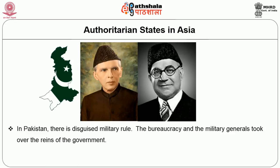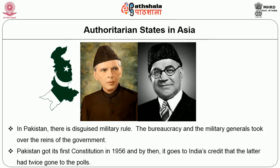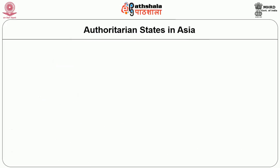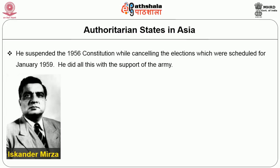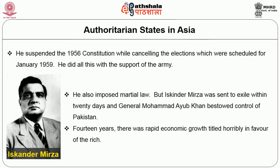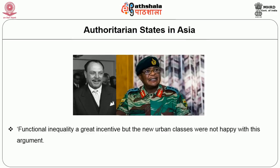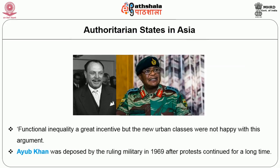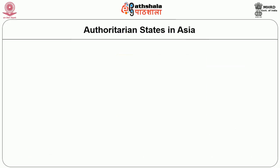Pakistan got its first constitution in 1956, by which time India had already gone to the polls twice. President Sikandar Mirza suspended the 1956 constitution and cancelled elections scheduled for January 1959, doing so with the support of the army and imposing martial law. But Mirza was sent into exile within 20 days and General Muhammad Ayub Khan took control of Pakistan. Over 14 years there was rapid economic growth, though it tilted horribly in favour of the rich. Ayub Khan was deposed by the ruling military in 1969 after prolonged protests, and elections were promised.